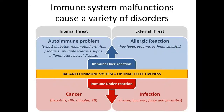Sometimes your immune system goes haywire, and when that happens there are a number of different kinds of problems that can occur. We're going to focus on three of them: autoimmunity — where your body is attacking your own healthy cells — and allergies, where your body is attacking things that are harmless, making a mistake thinking they are a threat.